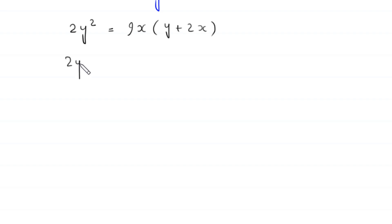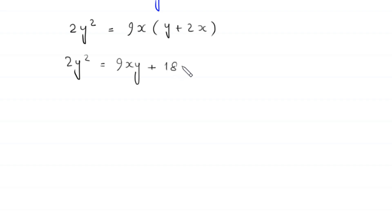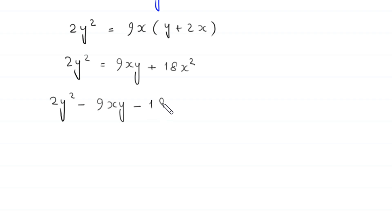So this equation becomes 2y² equals 9xy plus 18x². Moving these two terms to the left-hand side, this will become 2y² minus 9xy minus 18x² equals 0.